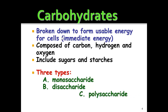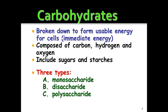There are three types of carbohydrates: monosaccharide, disaccharide, and polysaccharide. They all have 'saccharide' in them. Saccharide is a sugar unit. Mono means one, di means two, and poly means many. So monosaccharide is one sugar, disaccharide is two sugars, and polysaccharide is many sugars.